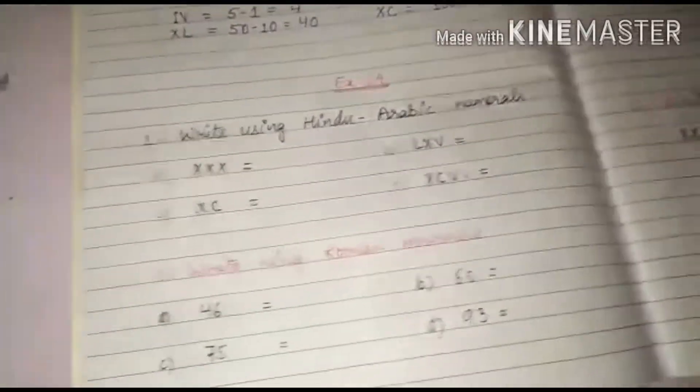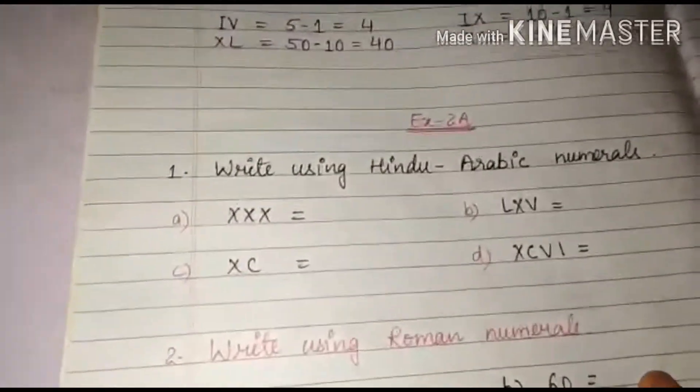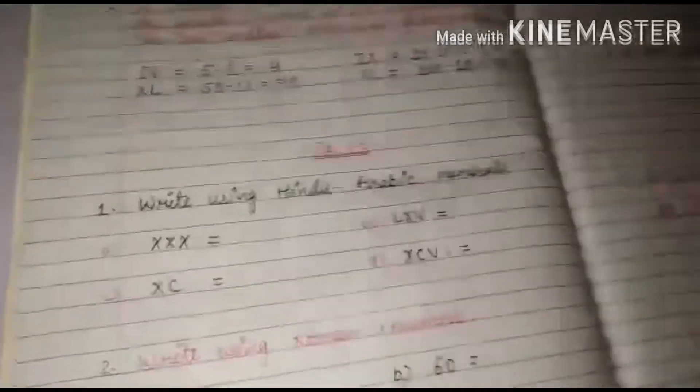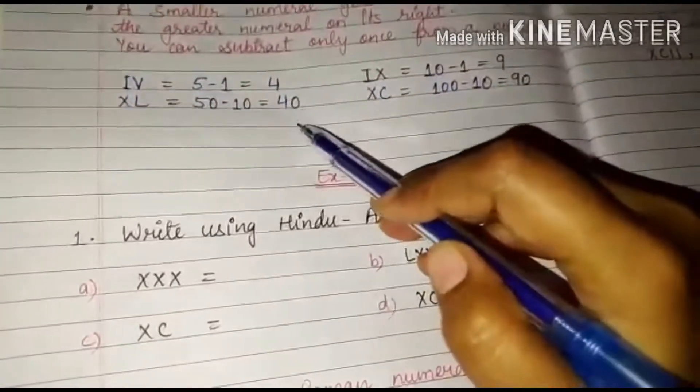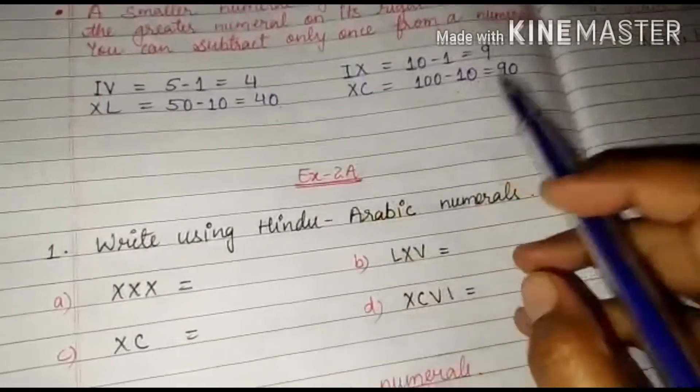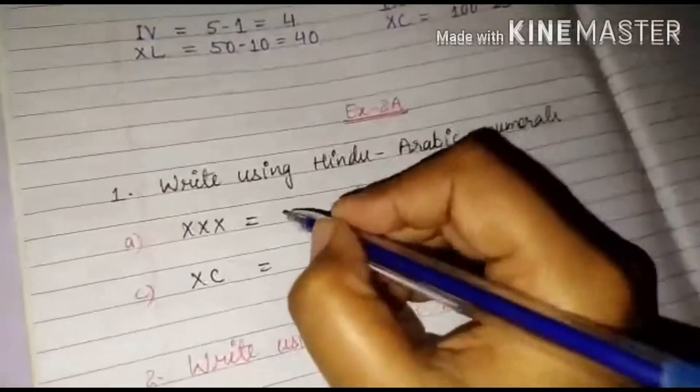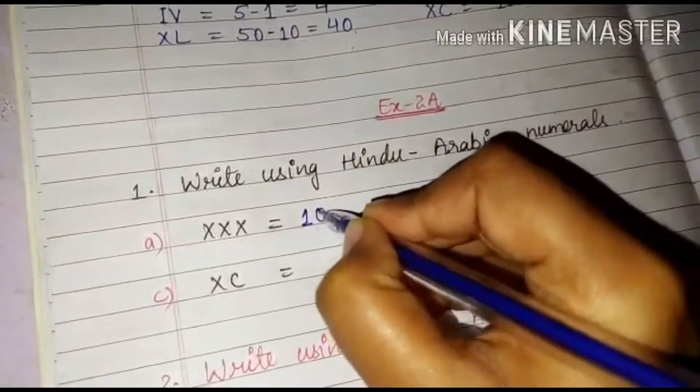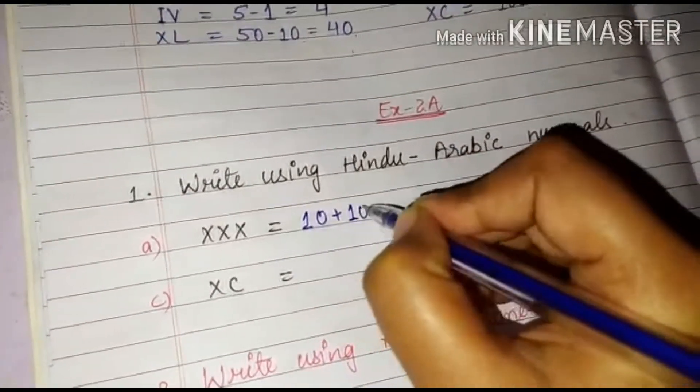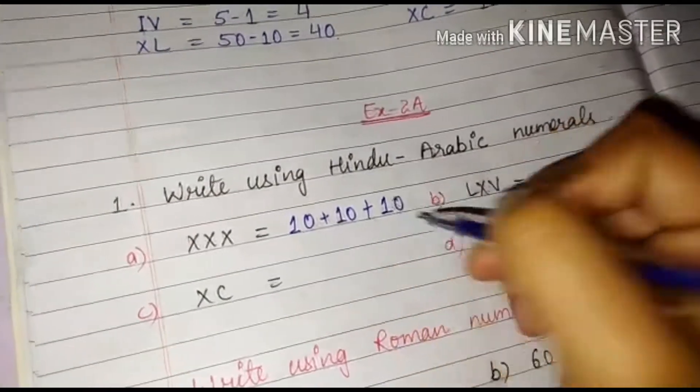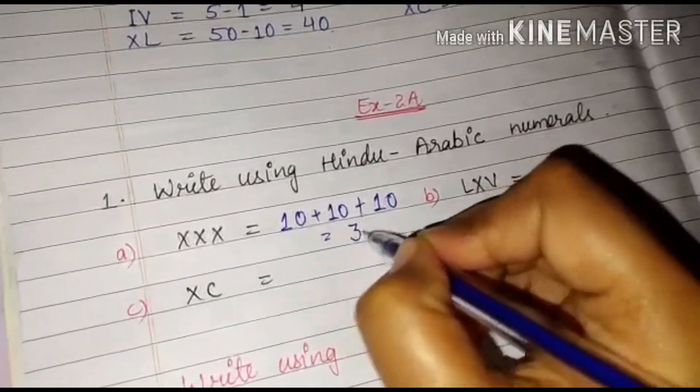Now comes to our exercise 2A. Our first question is write using Hindu Arabic numerals. Students I have told you that these numbers 44, 9, 10, 90 they are Hindu Arabic numerals. So XXX. So one X is our 10, another X is also 10, another X is also 10. So I am going to add them. Then I got the answer 30.